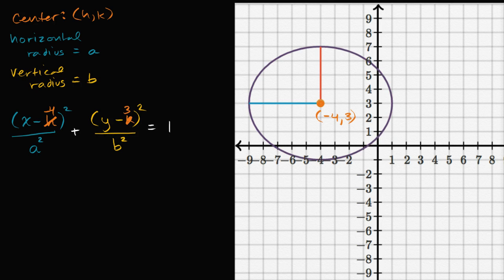And what is a going to be? Well, a is your horizontal radius, your radius in the horizontal direction, so it's the length of this line right over here, and we can see it's one, two, three, four, five units long. So a, in this case, is equal to five, so this is going to be five squared.